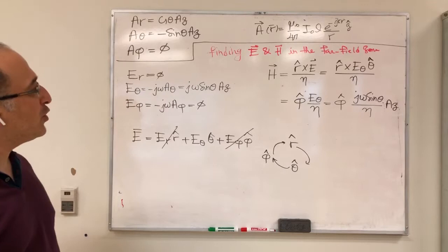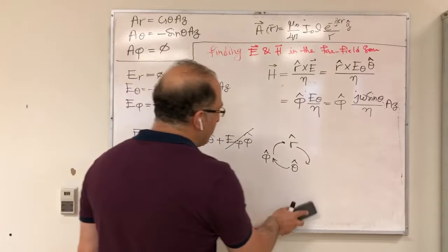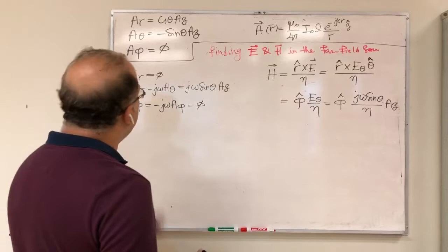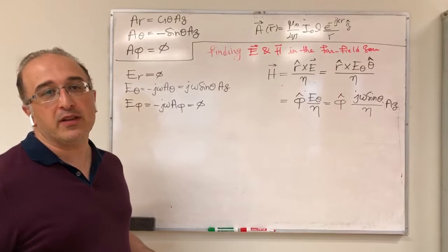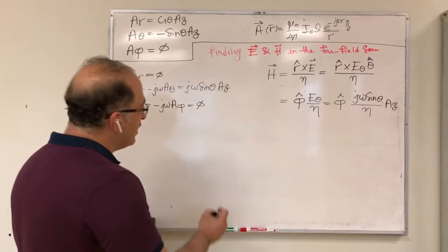So we have our H as well. Notice that E has θ̂ direction and H has φ̂ direction, and θ̂ and φ̂ are perpendicular to each other. So we essentially get a plane wave.